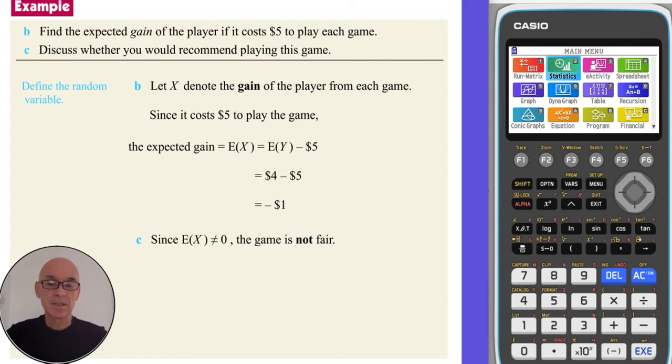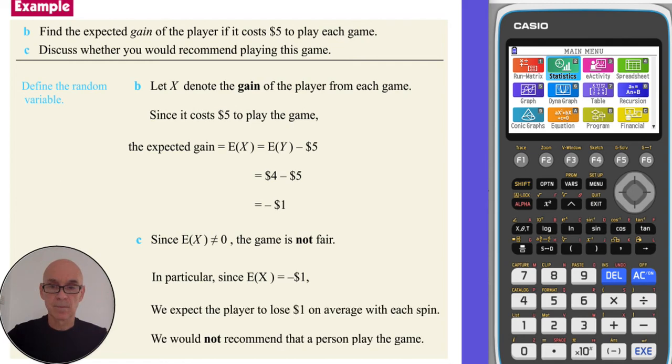So since the expected gain is not equal to zero, the gain is not a fair gain. Since the expected gain is minus $1, that means we would expect the player to lose a dollar on average with each spin. So we would not recommend a person to play the game.